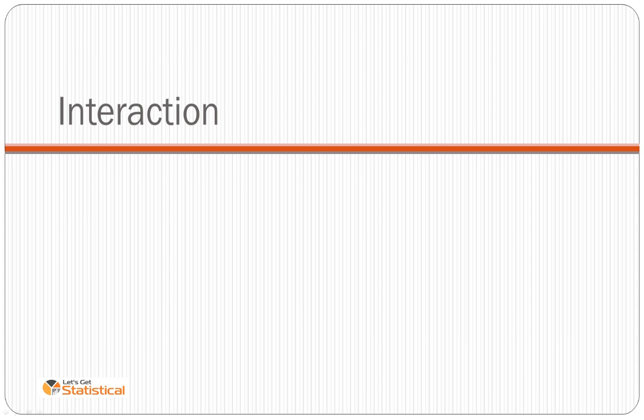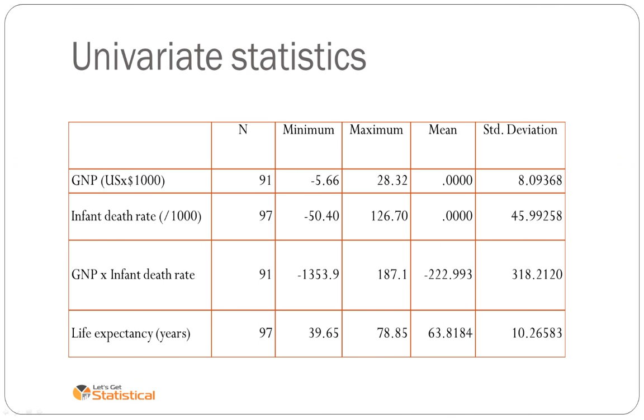Moving on to interaction testing. Interactions occur between two variables. Let's just have a look at what a mean table looks like for creating interactions. So in this case life expectancy is our DV, gross national product is our first IV, and infant death rate is our second IV. So gross national product has been centered, infant death rate has also been centered.